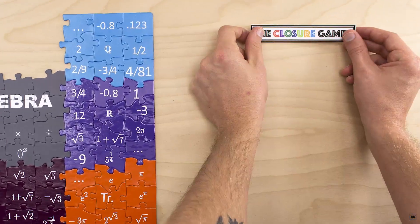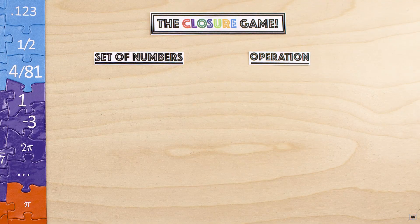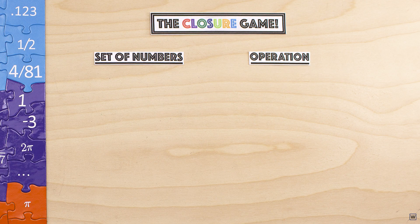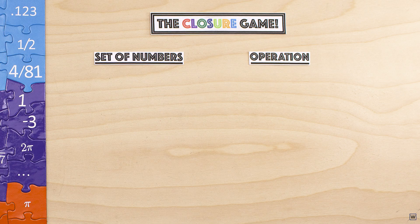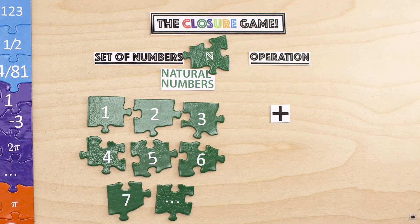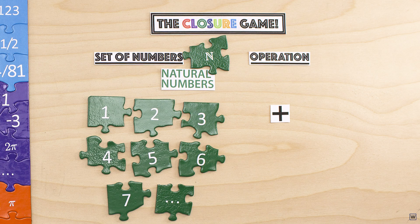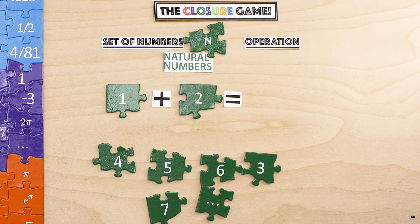Let's play a game. I'll give you a set of numbers and an algebraic operation. I want you to tell me if any two numbers in the set, when combined with the operation, give a number that is not in the set. Our first set is the natural numbers, and our operation is addition. So the question is, are there any two natural numbers that when added together produce something that is not a natural number?